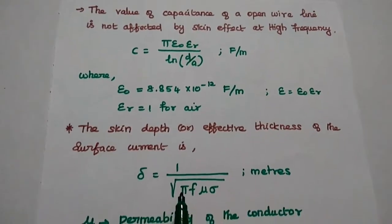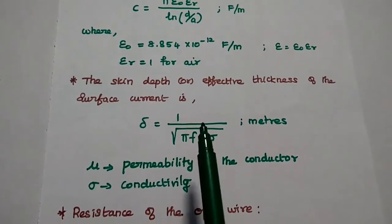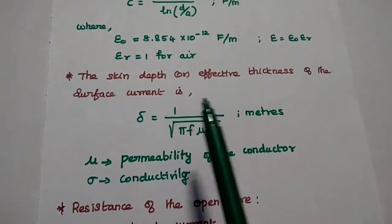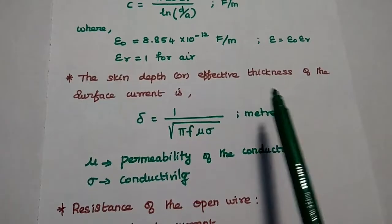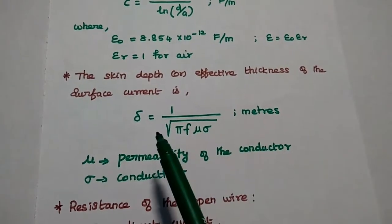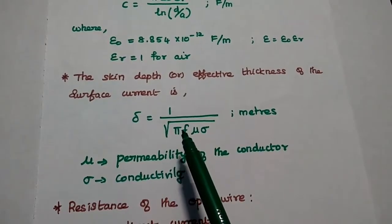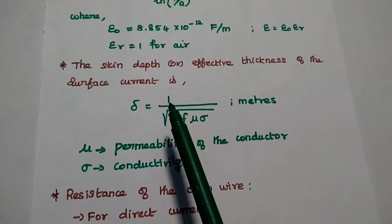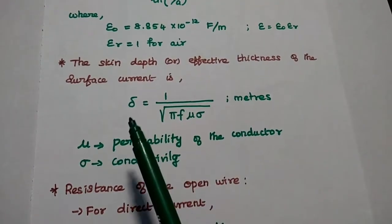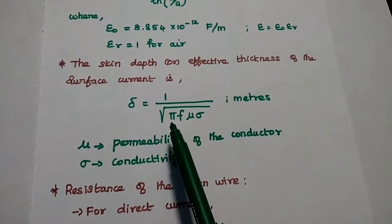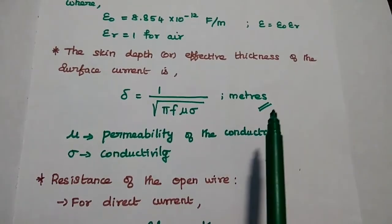Epsilon_r equals 1 for air. Next, we analyze the resistance. We consider the skin depth value — the skin depth or effective thickness of the surface current is delta = 1 / sqrt(pi * f * mu * sigma), with unit meters. Here mu is the permeability of the conductor and sigma is the conductivity of the conductor.